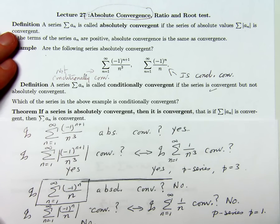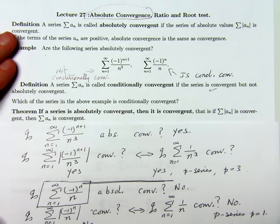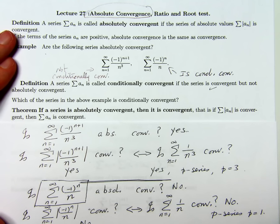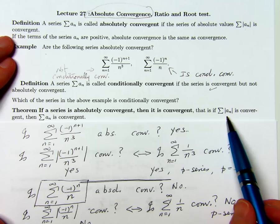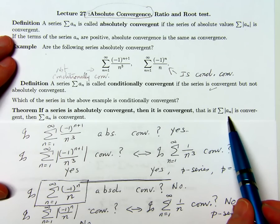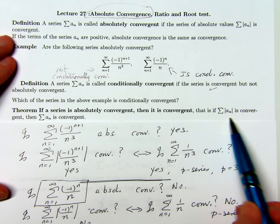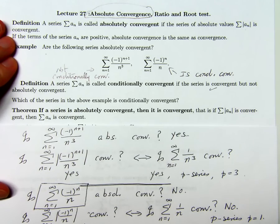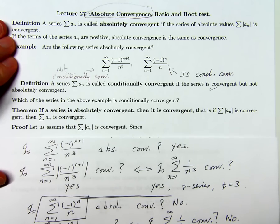Here's a very important and useful theorem. If a series is absolutely convergent, then I can conclude immediately that it's convergent. This gives us an easier method to check if an alternating series is convergent or not. Let's see why it's true.